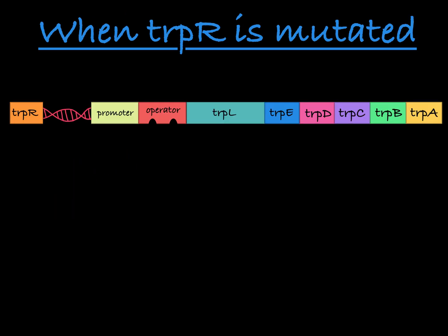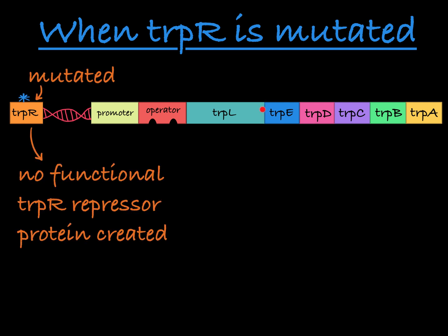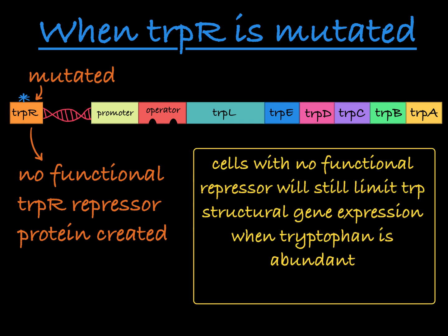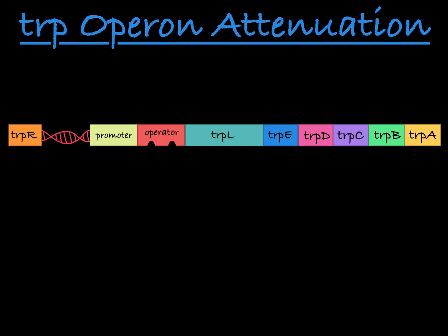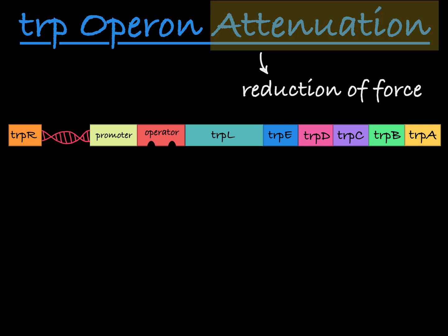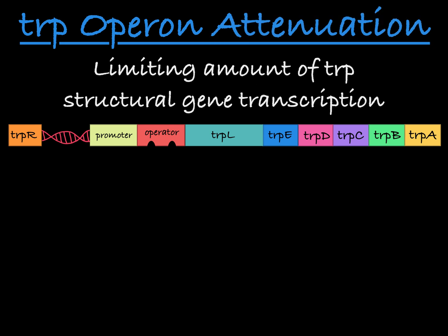Here's the kicker. When trpR is mutated and the cell is not making a functional repressor, you'd expect these structural genes to constantly be expressed — but that is not the case. Cells with no trp repressor will still limit transcription of these structural genes when there is an abundance of tryptophan, indicating that there is another mechanism at work. That secondary mechanism is called attenuation, meaning reduction of force — limiting the amount of transcription of the trp structural genes.